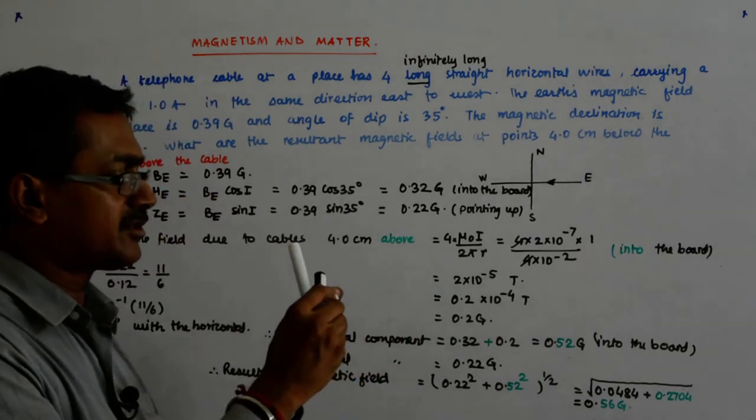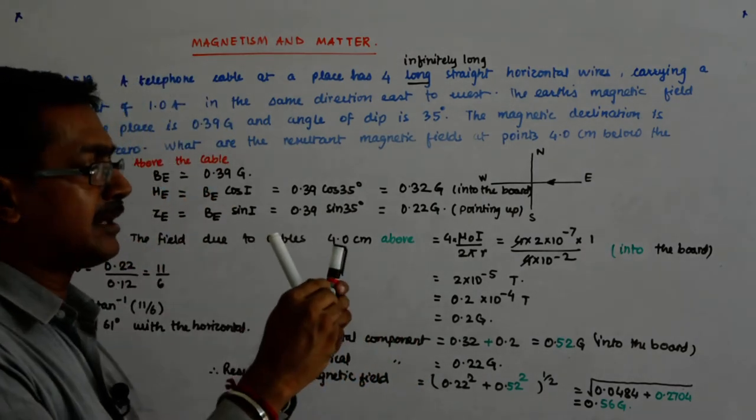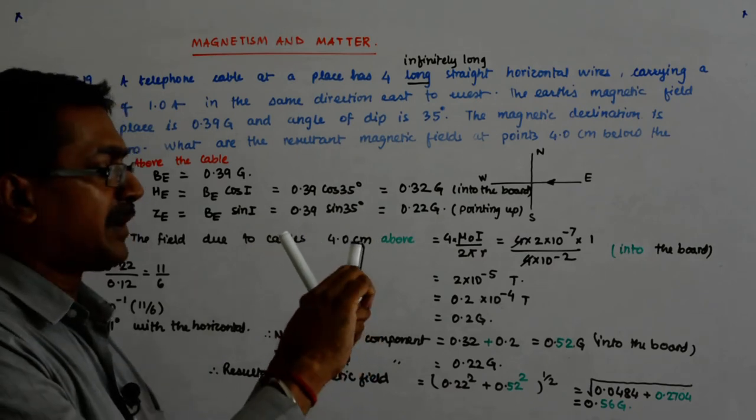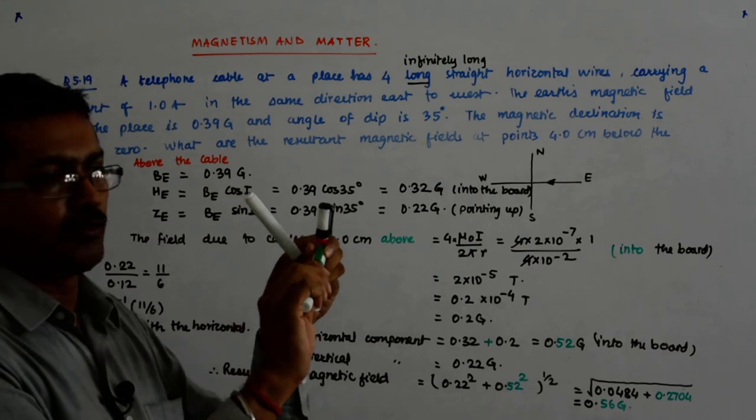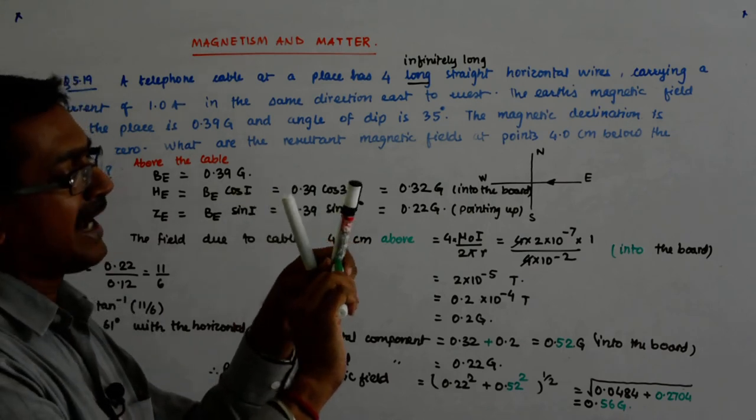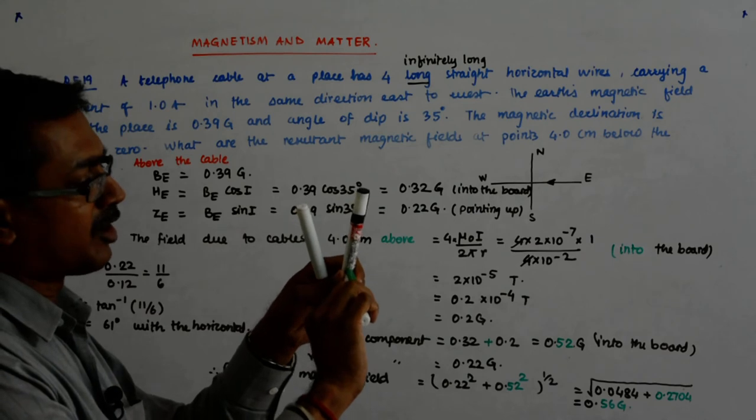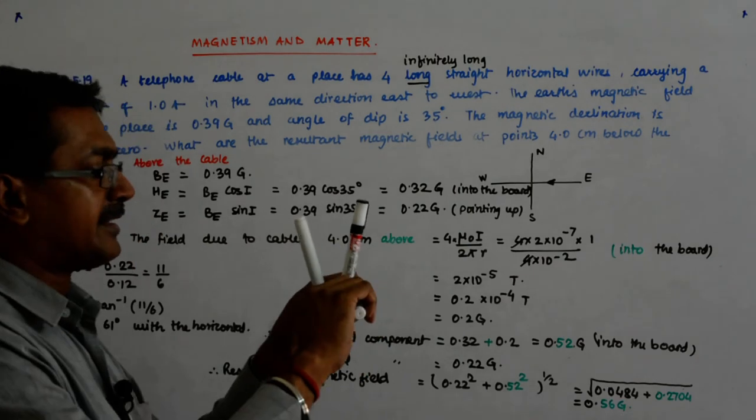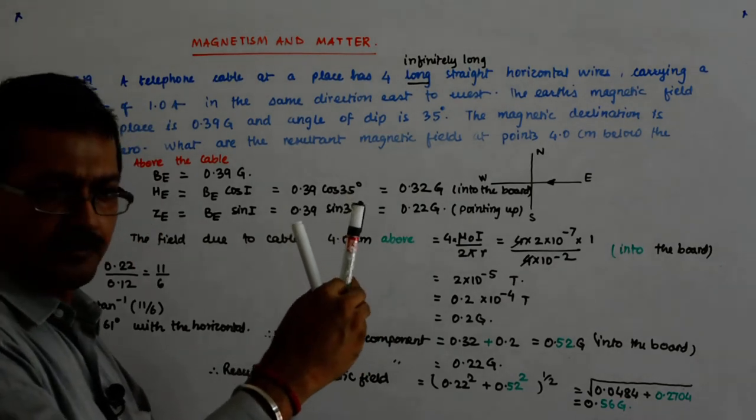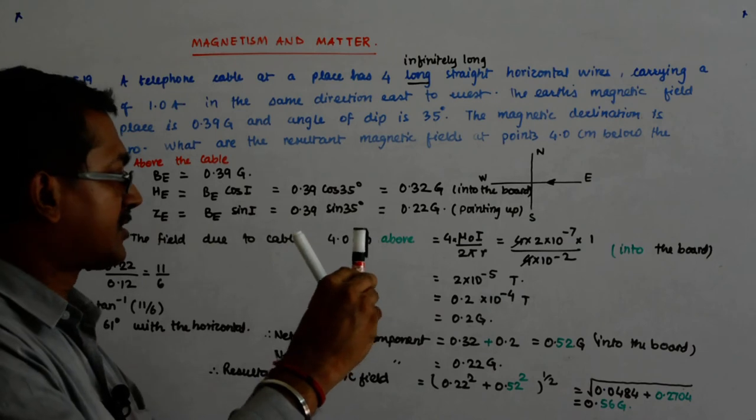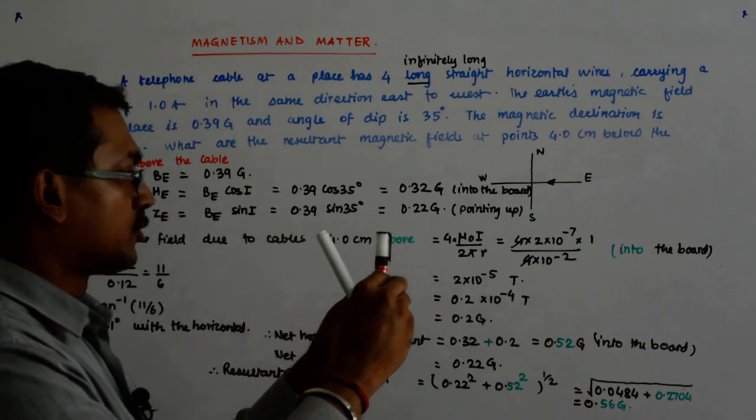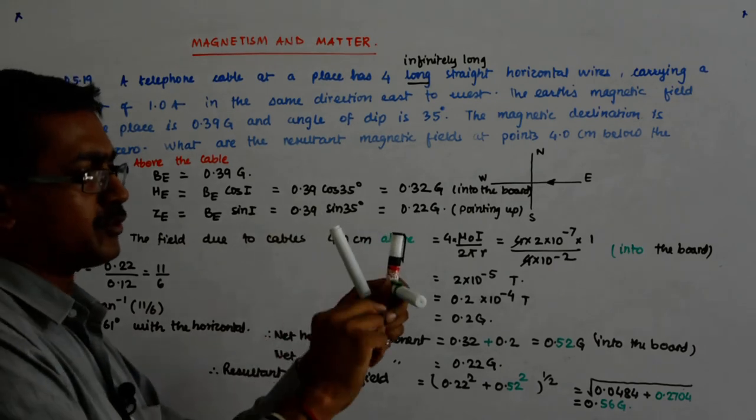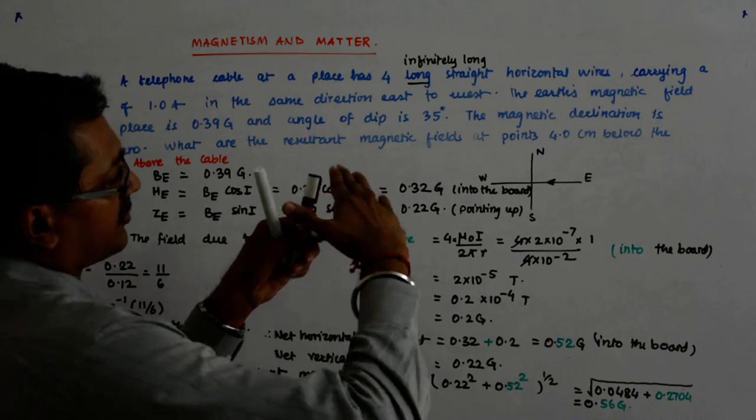Now try to think. The horizontal component is now this big and my vertical component becomes only 0.22. In earlier case, what was happening? My horizontal component was small 0.12 and my vertical, below, below the cable, my vertical component had gone like that. So angle came out to be some 61 degrees, right? Now here what happens? The horizontal component becomes very big compared to this. This remains 0.22 while this becomes 0.52. You understand?